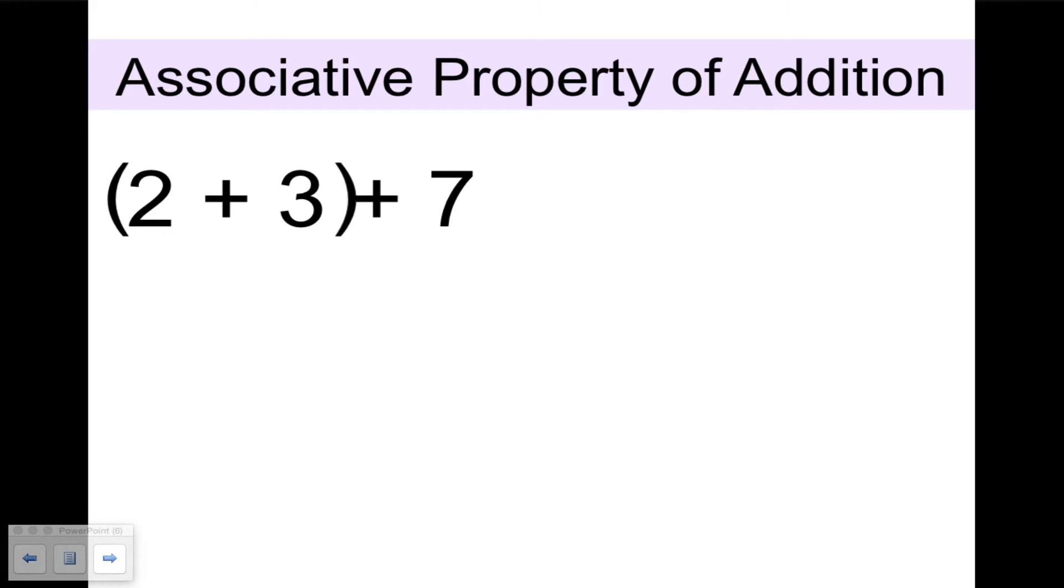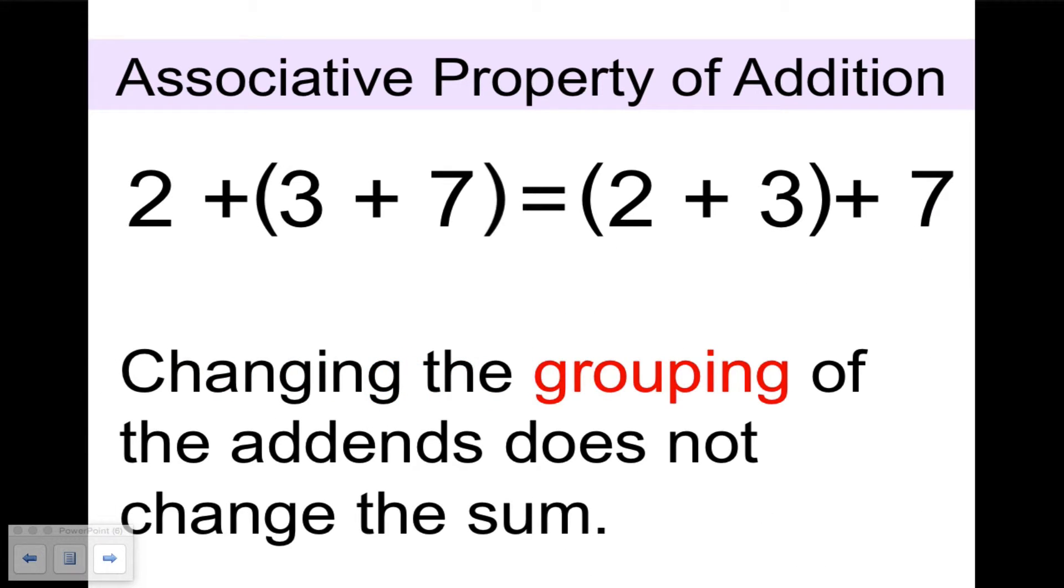If we shift the grouping symbols, now we have 3 plus 7, which is 10, plus 2 makes 12. You can change the order of the grouping and it does not change the sum. What this says exactly is: changing the grouping of the addends does not change the sum.